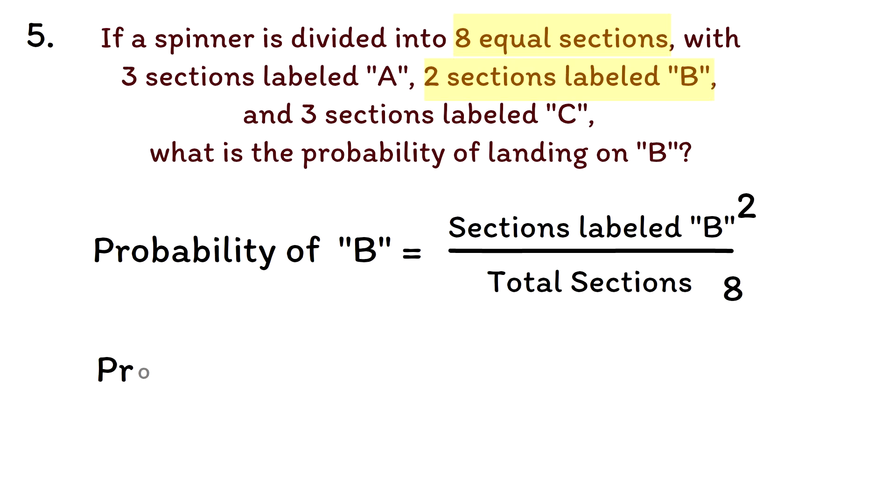Therefore, the probability of landing on B is 2 over 8. We can reduce this fraction. 2 can divide itself 1, and 8 divided by 2 is 4. Probability of landing on B is therefore 1 over 4. We will end this video here.